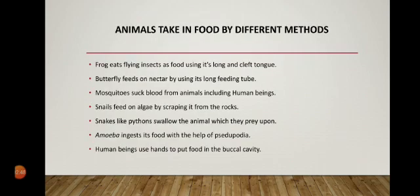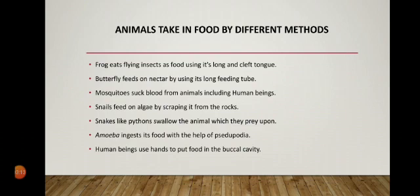Different animals take in food by different methods. All animals have life and need food for survival. For example, a frog eats flying insects as food. The frog uses its long, cleft — that is, forked — tongue to catch its prey such as insects.